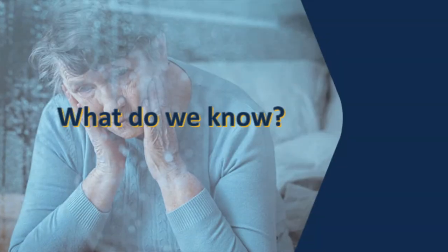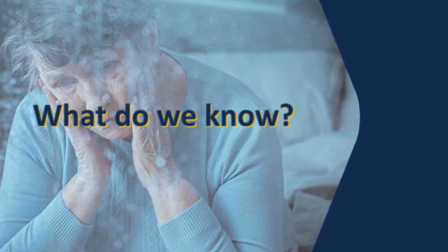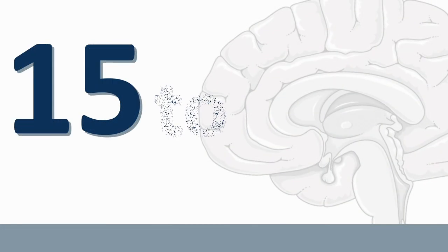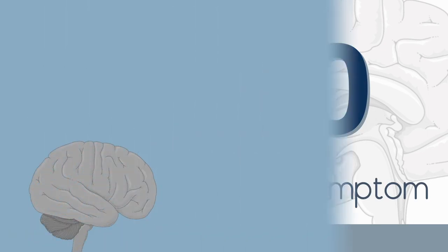So let's go back and try to understand what we currently know about the neuroscience of Alzheimer's. Almost 15 to 20 years before the onset of any symptoms in the brain of a patient,